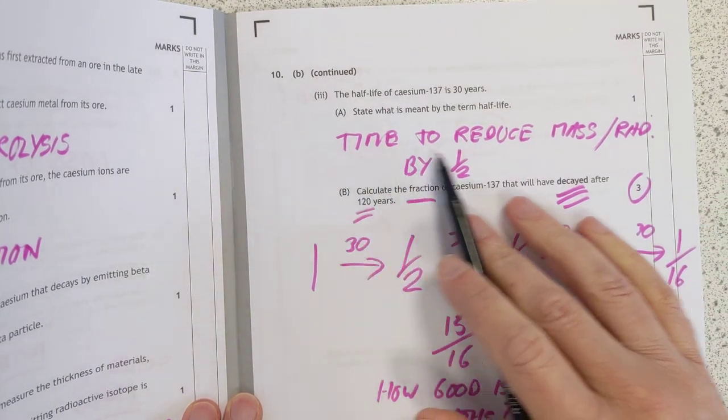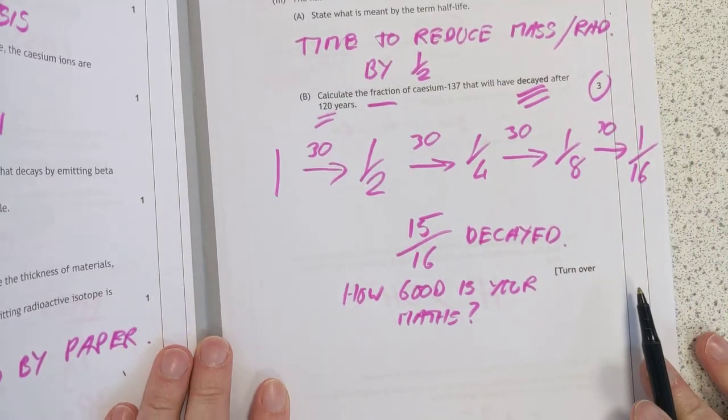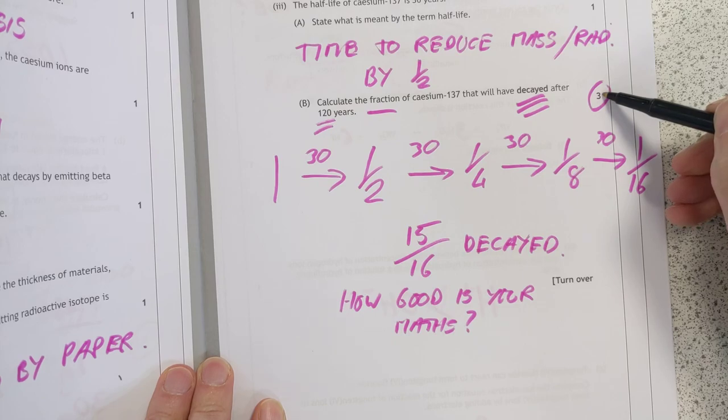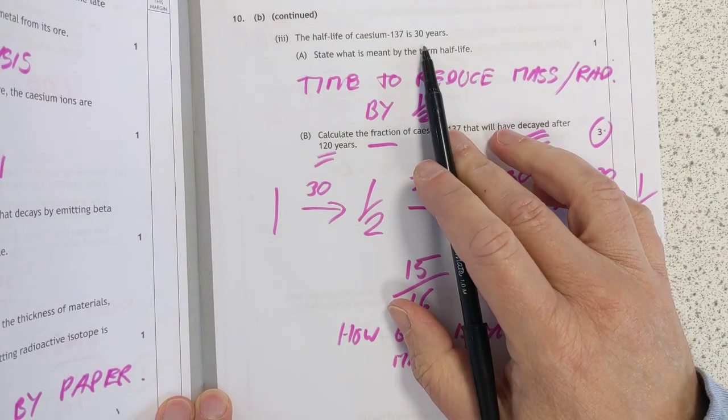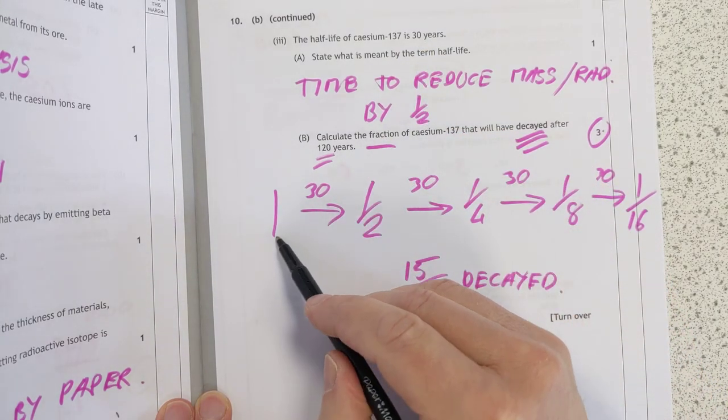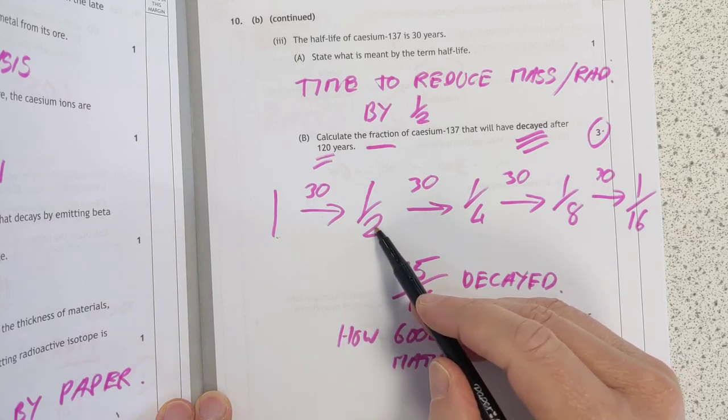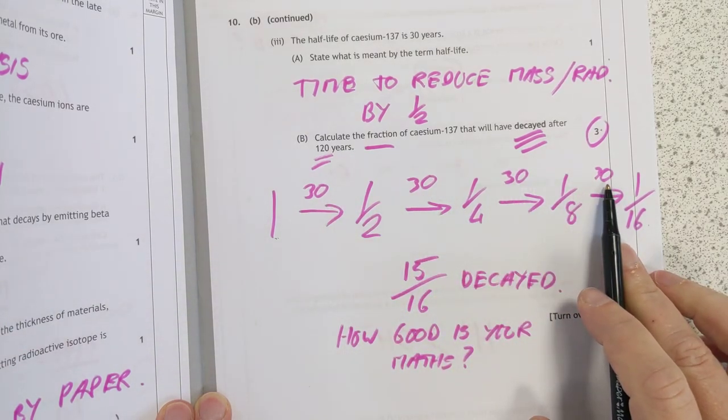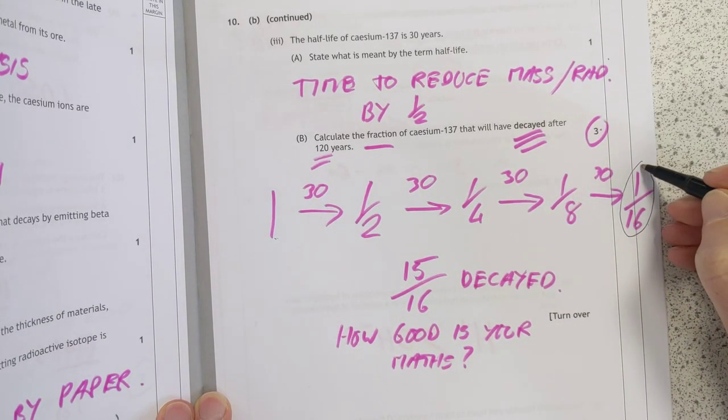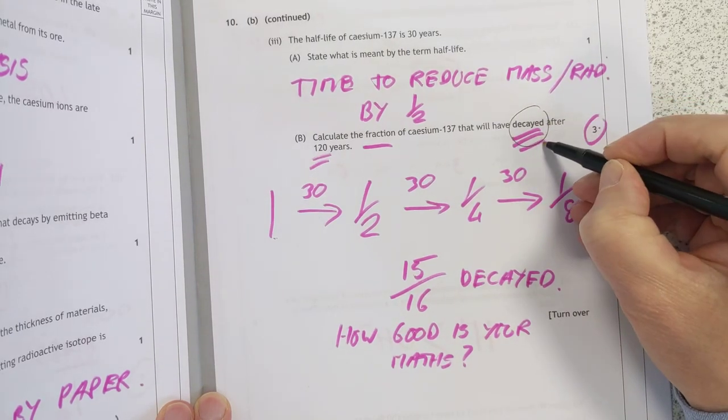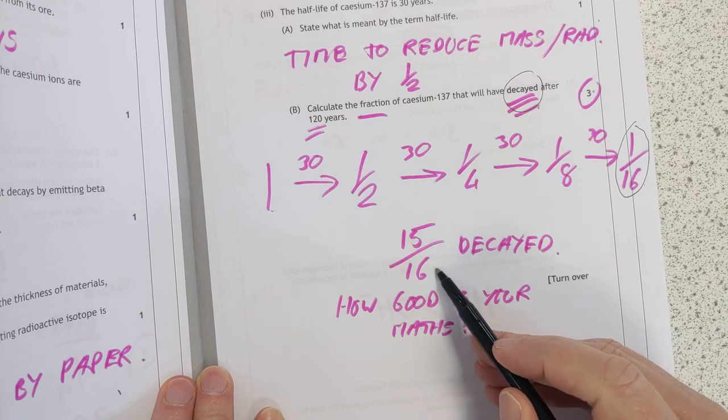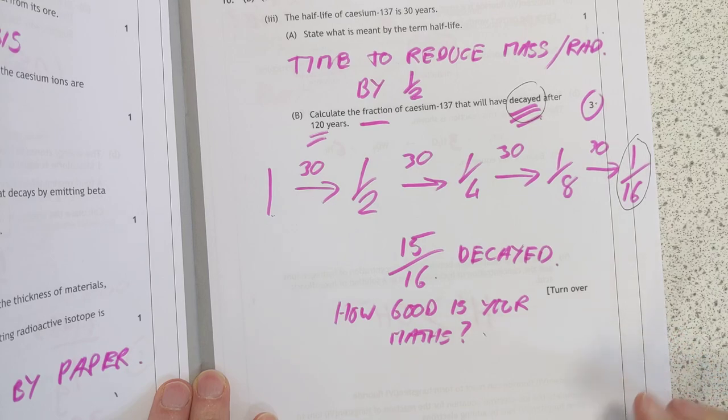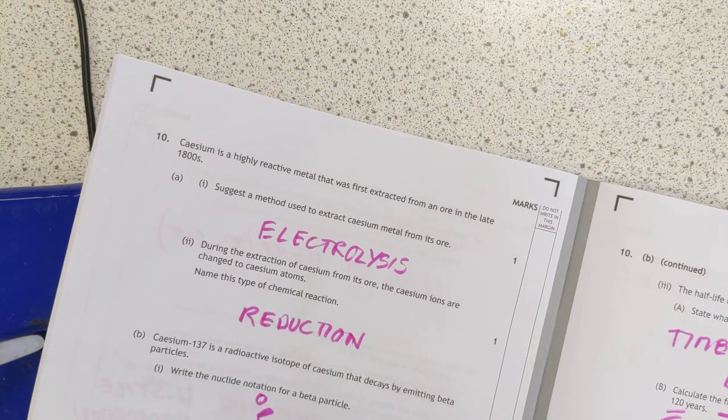Half-life definition. It's the time to reduce the mass or the radiation level by half. Simple definition time, guys. This is a three-mark calculation. It's a half-life calculation. The half-life is 30 years. And it's a fraction. So, if we just start, we assume you start with one. Because we're going to go to a half and a quarter. And then you get down to here. By the time you're here, you've done four decays. So, that's 120 years. You're left with a sixteenth. But the question is asking how much has decayed. So, how much has gone? The answer is 15 sixteenths have decayed. That might not be good for you if your math is a bit shaky. But, because it's three marks, you've still got partial marking.